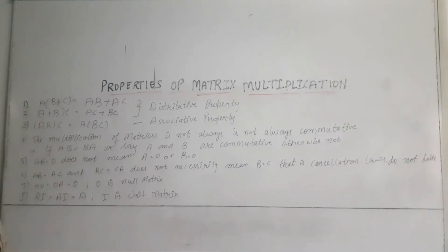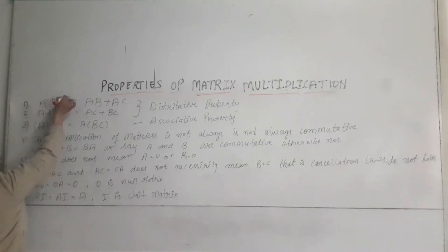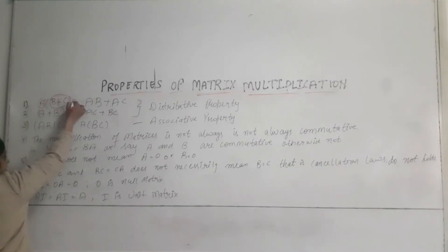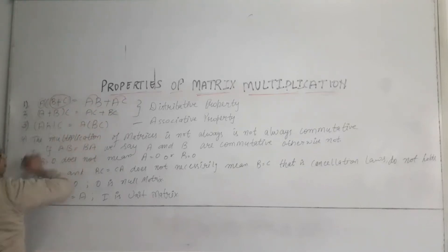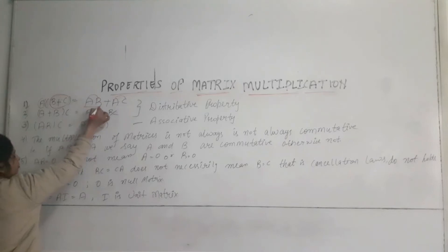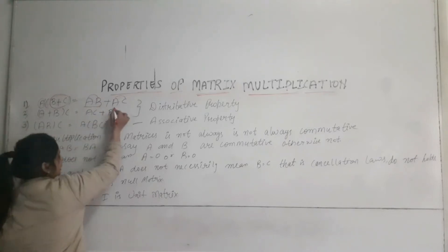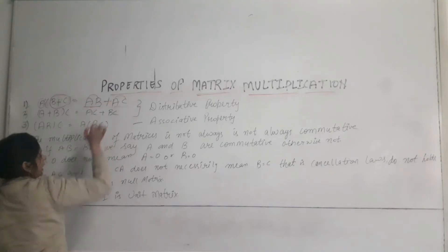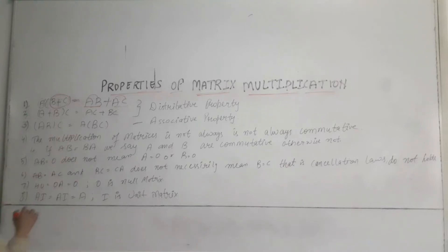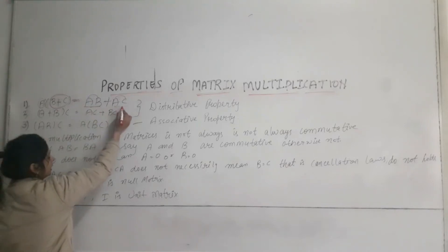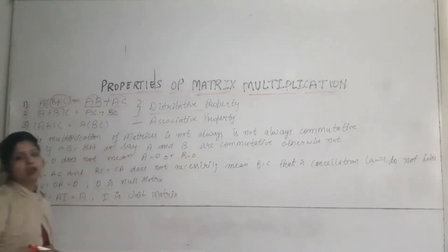The first property is: when A matrix is multiplied by the matrix B plus C, this is equal to AB plus AC. That means, first we multiply A by B matrix and A by C matrix, and then we add both of them — then these are equal. So A into (B plus C) is equal to AB plus AC. This is the distributive property.